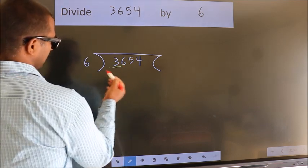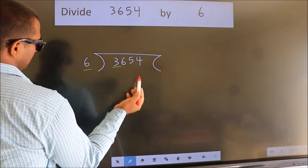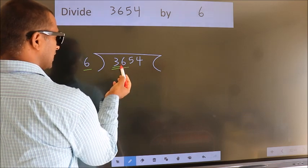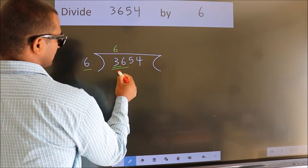Here we have 3, here 6. 3 is smaller than 6, so we should take 2 numbers: 36. When do we get 36 in the 6 table? 6 times 6 equals 36.